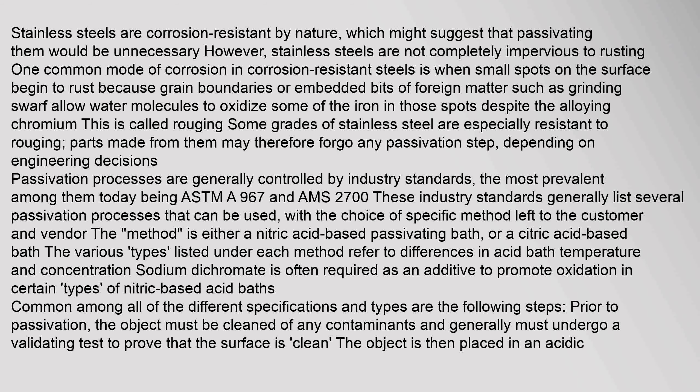Stainless steels are corrosion resistant by nature, which might suggest that passivating them would be unnecessary. However, stainless steels are not completely impervious to rusting. One common mode of corrosion is when small spots on the surface begin to rust because grain boundaries or embedded bits of foreign matter such as grinding swarf allow water molecules to oxidize some of the iron in those spots, despite the alloying chromium; this is called rouging. Some grades of stainless steel are especially resistant to rouging, and parts made from them may therefore forego any passivation step, depending on engineering decisions. Passivation processes are generally controlled by industry standards, the most prevalent today being ASTM A967 and AMS 2700.